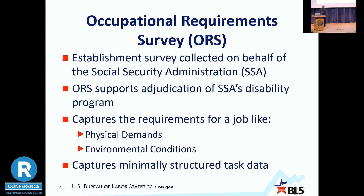ORS captures requirements like physical demands, environmental conditions, cognitive and mental demands, and education, training, and experience requirements — things like literacy, credentials, and on-the-job training. We get the task data and it's very unstructured. It comes in different ways: sometimes it's a run-on sentence, sometimes different words or letters are capitalized, we have misspellings or incorrect characters — at one point when I was running this model we had a degree symbol in there, so that was fun to deal with.